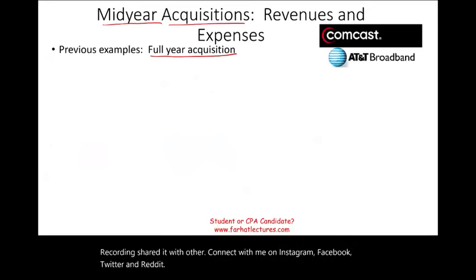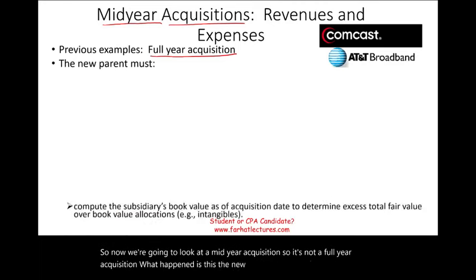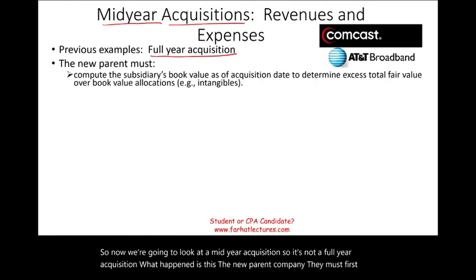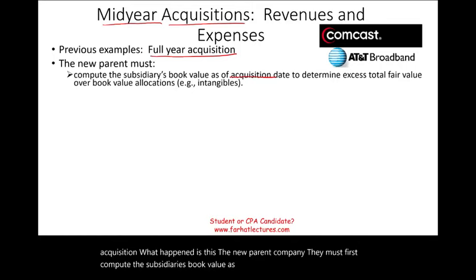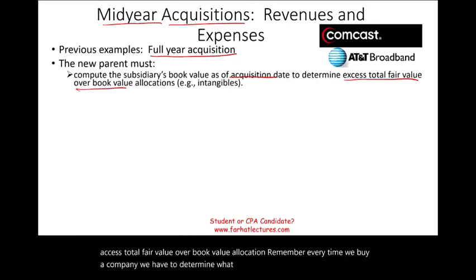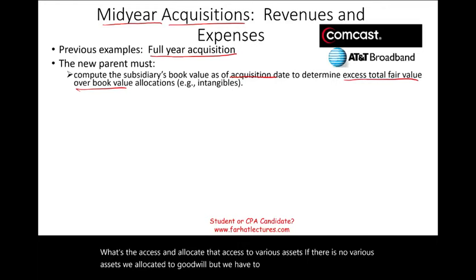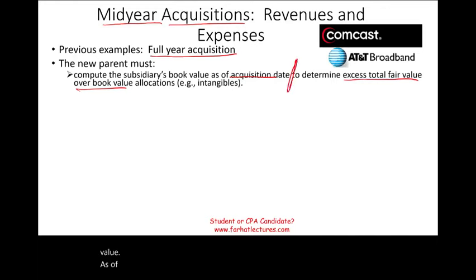Now we're going to look at a mid-year acquisition — not a full-year acquisition. The new parent company must first compute the subsidiary's book value as of the acquisition date to determine the excess of total fair value over book value allocation. Every time we buy a company, we have to determine the fair value, how much we paid, what's the excess, and allocate that excess to various assets. If there are no specific assets, we allocate it to goodwill. We have to compute the book value as of the acquisition date.